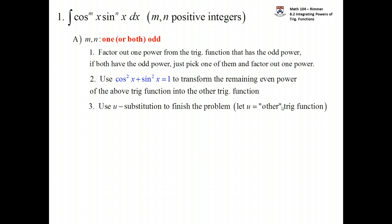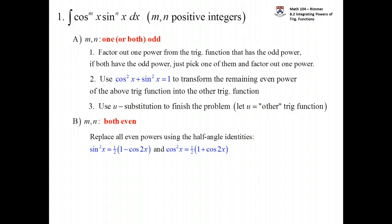So in the absence of that, if there's no odd powers present then the possibility then would be maybe they're both even. Now when they're both even you would do something totally different. When they're both even what we do is we take all even powers and replace them using the half angle identities.